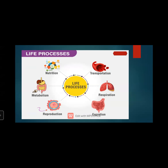Excretion is the process by which unwanted materials not required by our body are excreted — including during urine formation. Reproduction is the process of producing the same kind — man gives birth to man, plants reproduce like plants, and animals give birth to animals. Metabolism involves the digestion of food inside our body.